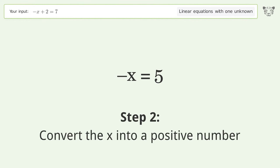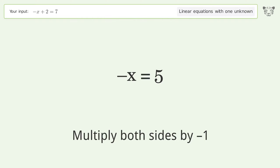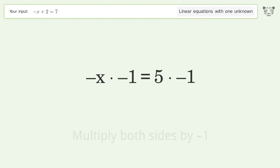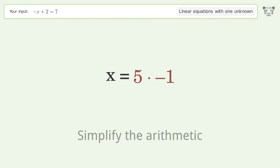Convert the x into a positive number: multiply both sides by negative 1. Remove the ones, then simplify the arithmetic.